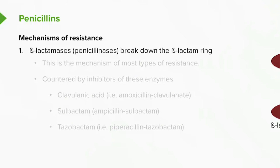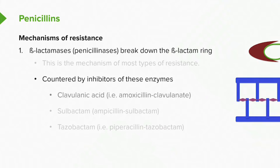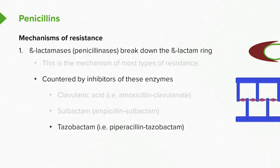Bacteria have developed defense mechanisms against penicillins. Some bacteria have beta-lactamase enzymes, also called penicillinases, which break down the beta-lactam ring — this is the mechanism of most types of resistance. They're countered by inhibitors of these enzymes. Clavulanic acid inhibits the beta-lactamase and is combined with amoxicillin as amoxicillin-clavulanate. Sulbactam is another beta-lactamase inhibitor combined with ampicillin as ampicillin-sulbactam. Tazobactam is the third, combined with piperacillin as piptazo.